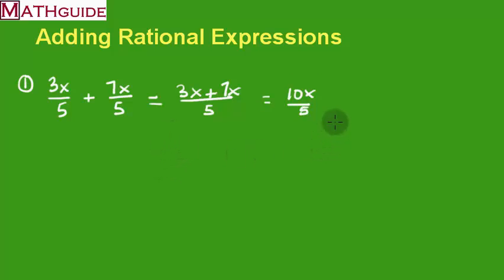Now when you're done adding the two numerators, we look to see if there's a common factor between the numerator and denominator. There is in this case. The common factor is 5. Divide the top by 5, you get 2x. Divide the bottom by 5, you get 1. So the final answer is 2x.